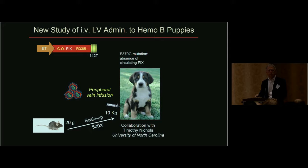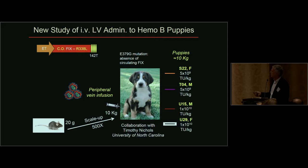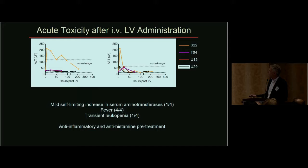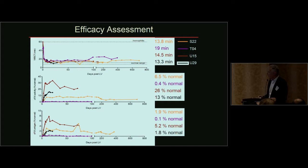The new unpublished data I will show are part of a collaboration established with Bioverative to further develop this approach. The study started in younger dogs — one advantage of a lentiviral-based platform is the possibility that the integrated vector can be administered to very young individuals and maintain expression throughout growth. We gave relatively modest doses compared to mice, and the hemophilia B dog colony at UNC was used. After bolus delivery, we observed a very mild acute inflammatory reaction — some transient fever in all dogs, and some self-limiting increase in aminotransferase in at least one dog.